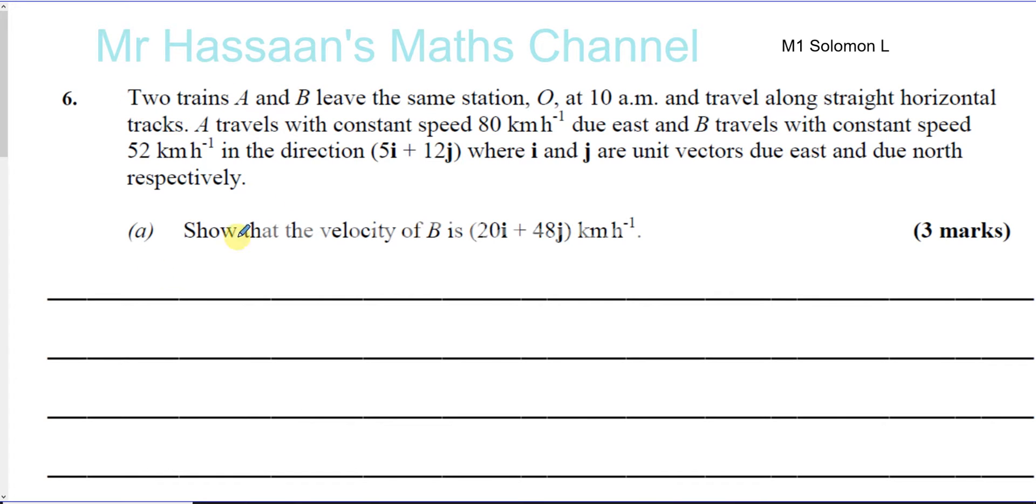Part A of the question. Two trains, A and B, leave the same station, O, at 10 a.m. They're both leaving at the same time and travel along straight horizontal tracks. A travels with a constant speed 80 km per hour due east, and B travels with a constant speed 52 km per hour in the direction 5i plus 12j, where i and j are unit vectors due east and due north, respectively. Show that the velocity of B is 20i plus 48j km per hour.